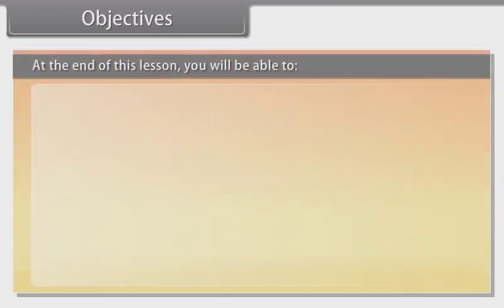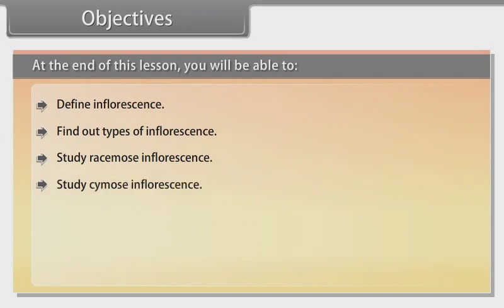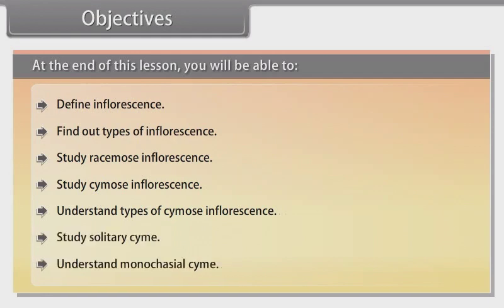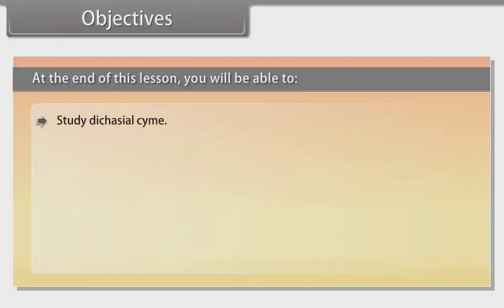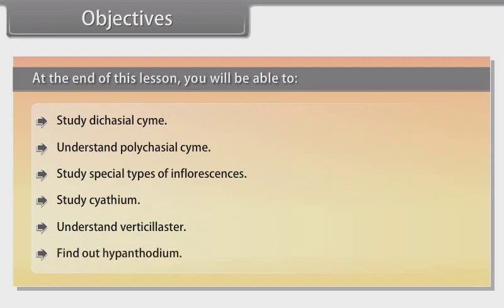At the end of this lesson you will be able to: define inflorescence, find out types of inflorescence, study racemose inflorescence, study cymose inflorescence, understand types of cymose inflorescence, study solitary cyme, understand monocasial cyme, study dicasial cyme, understand polycasial cyme, study special types of inflorescences including cyathium, verticillaster, and hypanthodium.